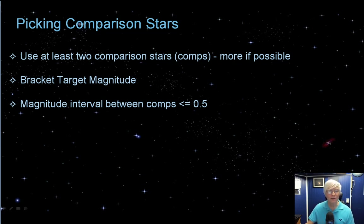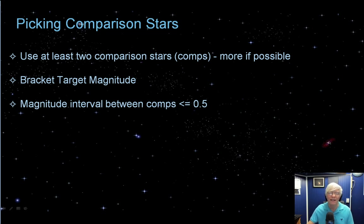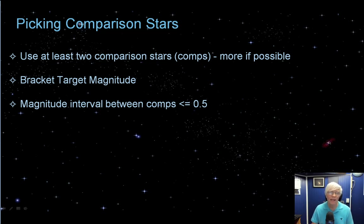Once you've found your variable star and you're ready to make your comparison, you've got to pick certain comparison stars. You should use at least two, and more if possible. You want to bracket the target magnitude — pick one comparison star that's fainter than the variable and one that's brighter, so you bracket the variable's magnitude between the two. Try to pick two comparison stars that are not more than 0.5 magnitude apart, as that will help you achieve a much more accurate visual estimate.